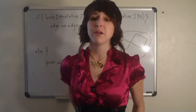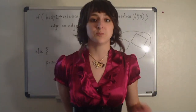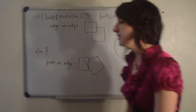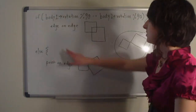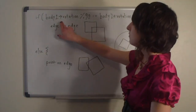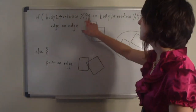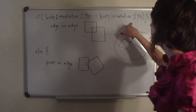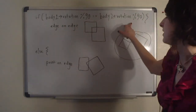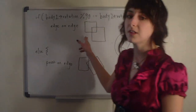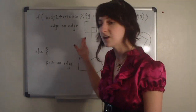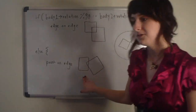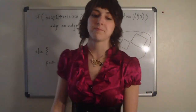To determine whether a collision is point on edge or edge on edge, we simply use this conditional. If the first body's rotation mod 90 is the same as the second body's rotation mod 90, then we know the collision is going to be resolved as edge on edge. Otherwise, we know it's going to be resolved as point on edge.